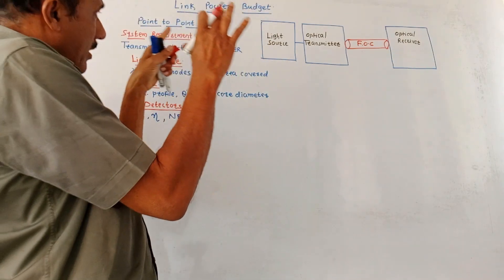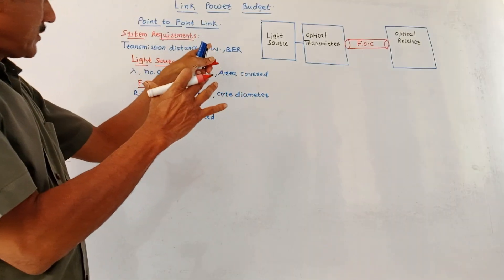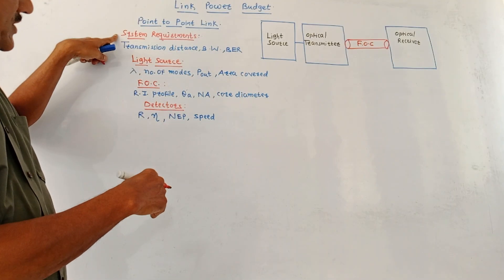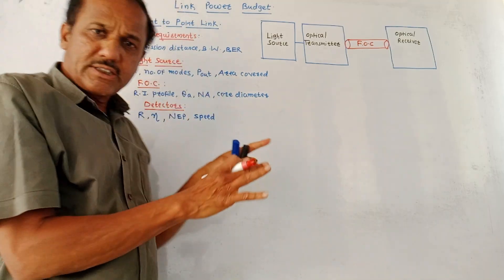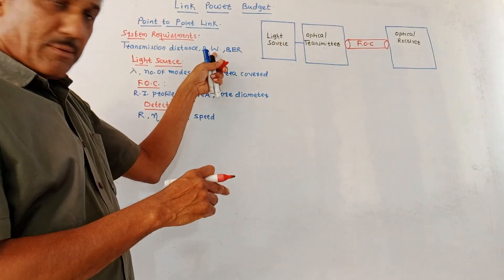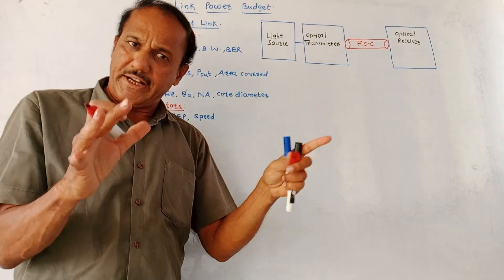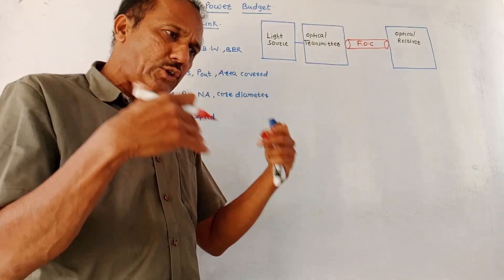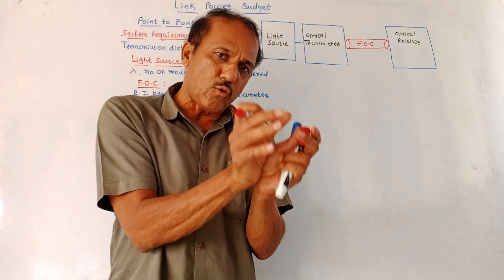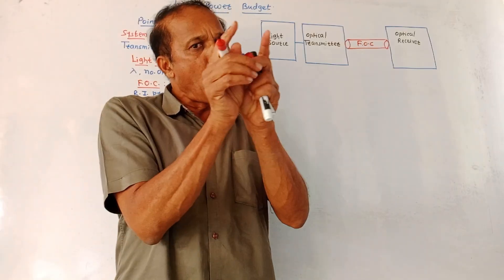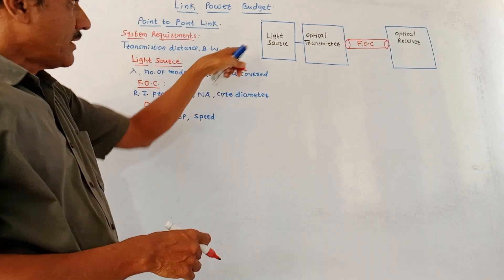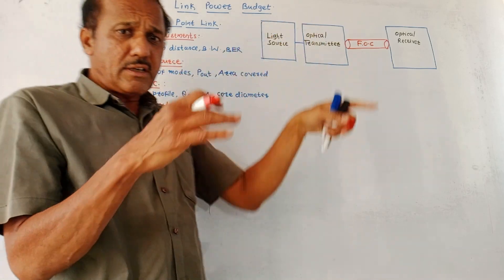For this point-to-point communication link, you should mention the system requirements. The major system requirements are transmission distance, bandwidth (BW), and bit error rate (BER). Bit error rate relates to how many bits are transmitted per second and how many of those bits are in error.